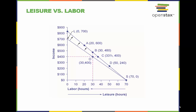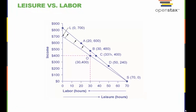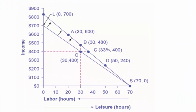Here we are using the same model of the consumption choice budget constraint, but in this case we are choosing how many hours to work versus how many hours to spend on leisure type activities.